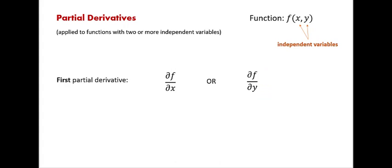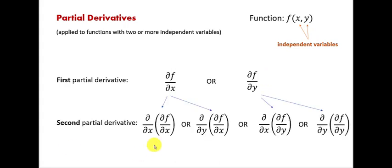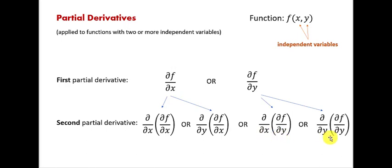How about the second partial derivative? There are actually four options for the second partial derivative. If we take the first derivative with respect to x, from there we can obtain two second partial derivatives — the resulting function can then be differentiated with respect to x or with respect to y. Two more come from the first partial derivative obtained with respect to y, when we take the result and differentiate it either with respect to x or with respect to y.